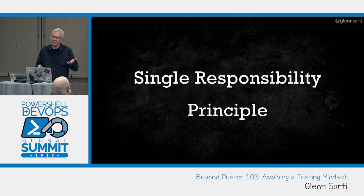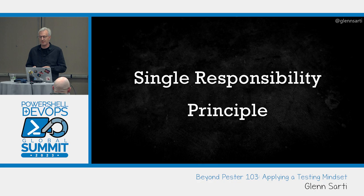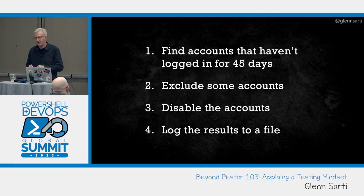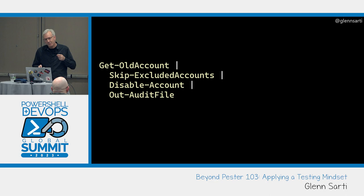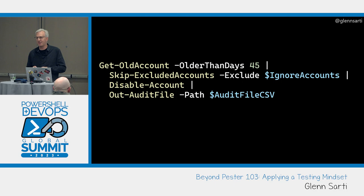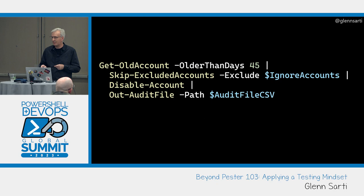The first tip is to split your code into smaller pieces that do a single thing — more formally known as the single responsibility principle, where a unit of code should only address one concern. This is also the Unix philosophy: a tool should do one thing and one thing well. The problem with the original script was everything was in one unit, so you couldn't test it. We need to carve it into small bits of work. For the disable process: step one, find the accounts to disable; step two, exclude any accounts that aren't supposed to be disabled; step three, disable them; step four, log it to the file. PowerShell's piping system lets us turn this list of tasks directly into code. We can add parameters to control how old the accounts need to be, when they're excluded, and where the audit file is. Now we have four functions, each doing a single task, and we can test each thing individually.